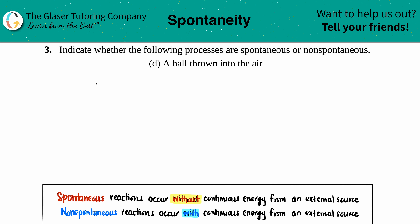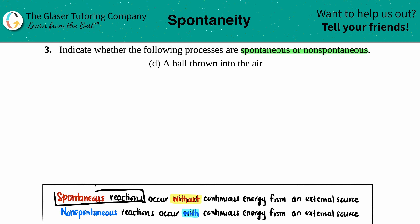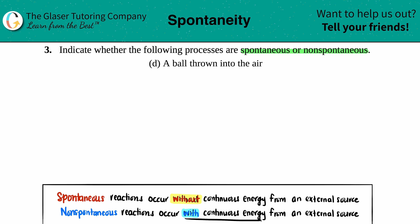Number three: indicate whether the following processes are spontaneous or non-spontaneous — letter D. Is a ball being thrown into the air classified as a spontaneous or non-spontaneous reaction? A spontaneous reaction occurs without a continuous amount of energy from an external source, however a non-spontaneous reaction does need a continuous amount of energy from somewhere in order for it to happen.